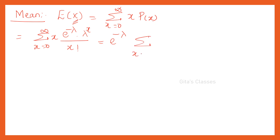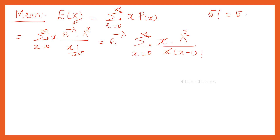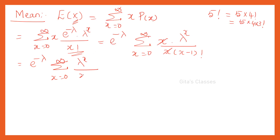Taking e^(−λ) outside, we have Σ (X from 0 to ∞) X · λ^x / x!. Now, x! can be written as X · (X−1)!, so X and X cancel. This gives e^(−λ) · Σ (X from 0 to ∞) λ^x / (X−1)!. Since X=0 gives −1 factorial which doesn't exist, we consider from X=1 to infinity.